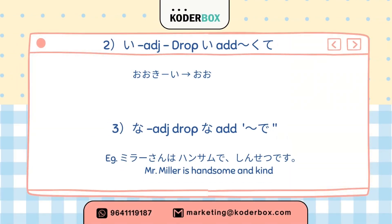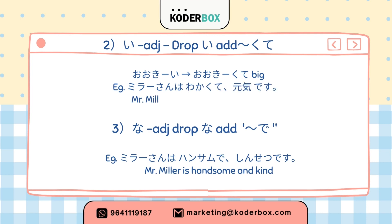Grammar 2: i-adjective — drop the final i and add kute. For example: oki → oki kute (big). Mira san wa wakakute, genki desu — Mr. Myler is young and energetic.